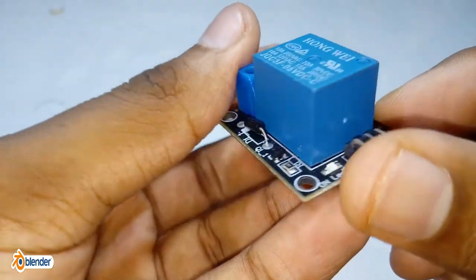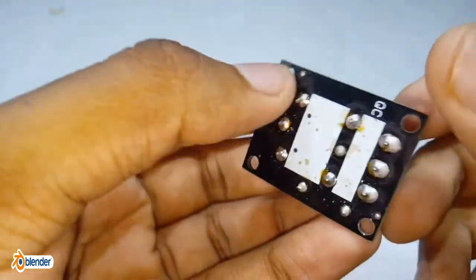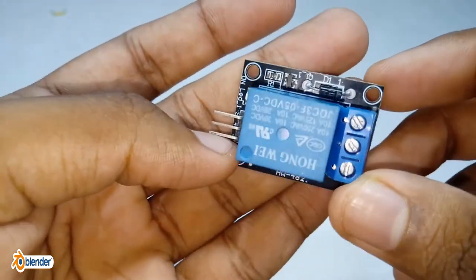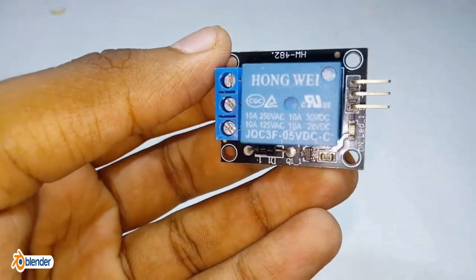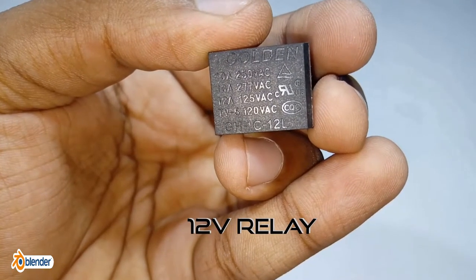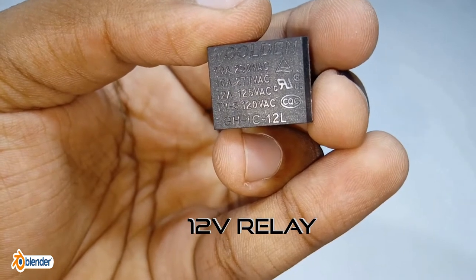In this video I will show you how to make a relay module like this in a breadboard. So let's get started. You will need these things to make it: a relay of 12 volt - you can choose any ratings as per your need.